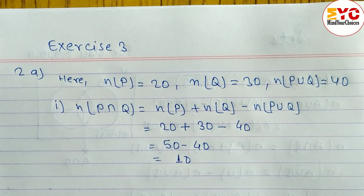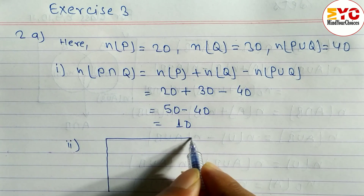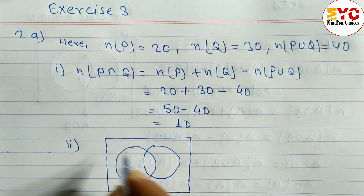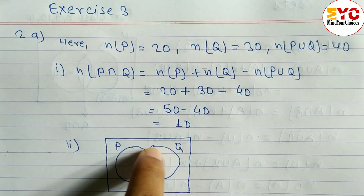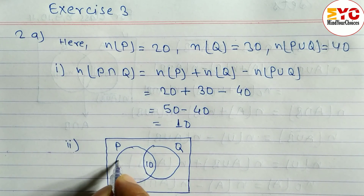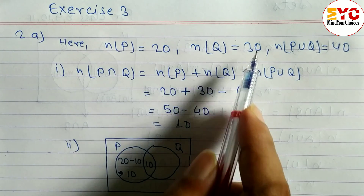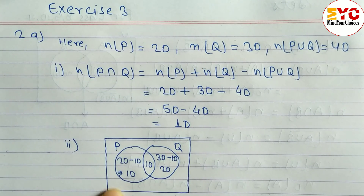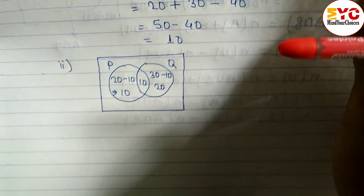In number two we have to draw the Venn diagram. Draw two sets P and Q. Intersection (middle) = 10. n(P) = 20, so only P = 20 − 10 = 10. n(Q) = 30, so only Q = 30 − 10 = 20. For the outside region: since n(P∪Q complement) is not given, no need to write anything outside.